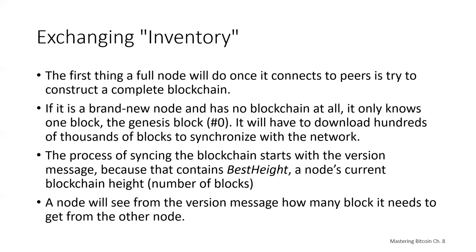A node will see the version message from its peers, know how many blocks they each have, and be able to compare how many blocks it has in its own blockchain. Peer nodes will exchange a get blocks message that contains the hash of the top block on their local blockchain. One of the peers will be able to identify that the received hash belongs to an older block, thus deducing that its own local blockchain is longer than its peer's. The peer with a longer blockchain identifies the first 500 blocks to share and transmits their hashes using an inventory message. The node that's missing these blocks will then retrieve them by issuing a series of get data messages, identifying the requested blocks using the hashes from the inventory message.